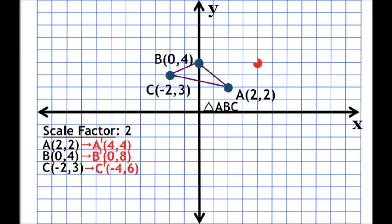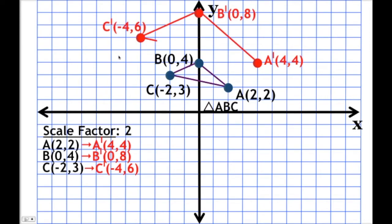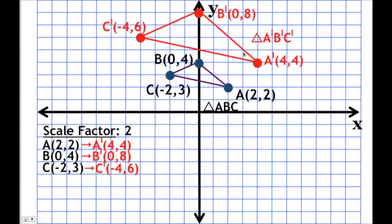Then we plot our points: A prime at (4, 4), B prime at (0, 8), and C prime at (-4, 6). That gives us our new shape. You can tell that even though the location is a little different, it's basically double the size of the original shape, which makes sense because our scale factor is 2 — so it is going to be double the size.